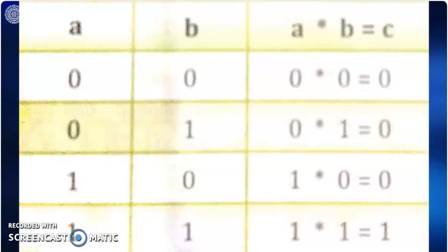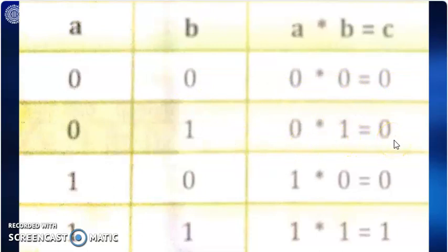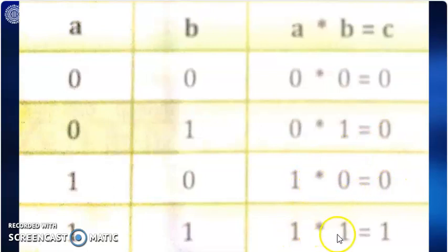The given table illustrates the multiplication of two binary digits. When 0 is multiplied with 0, it gives 0 as a result. When 0 is multiplied with 1, it gives 0 as a result. When 1 is multiplied with 0, it gives 0 as a result. When 1 is multiplied with 1, it gives 1 as a result.